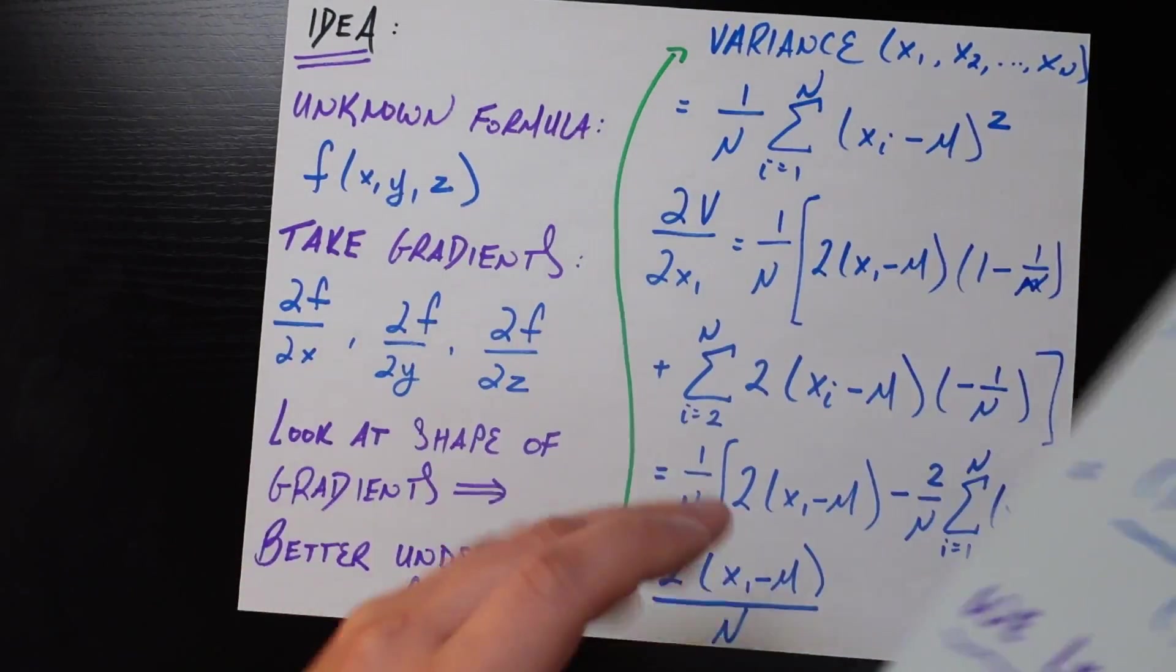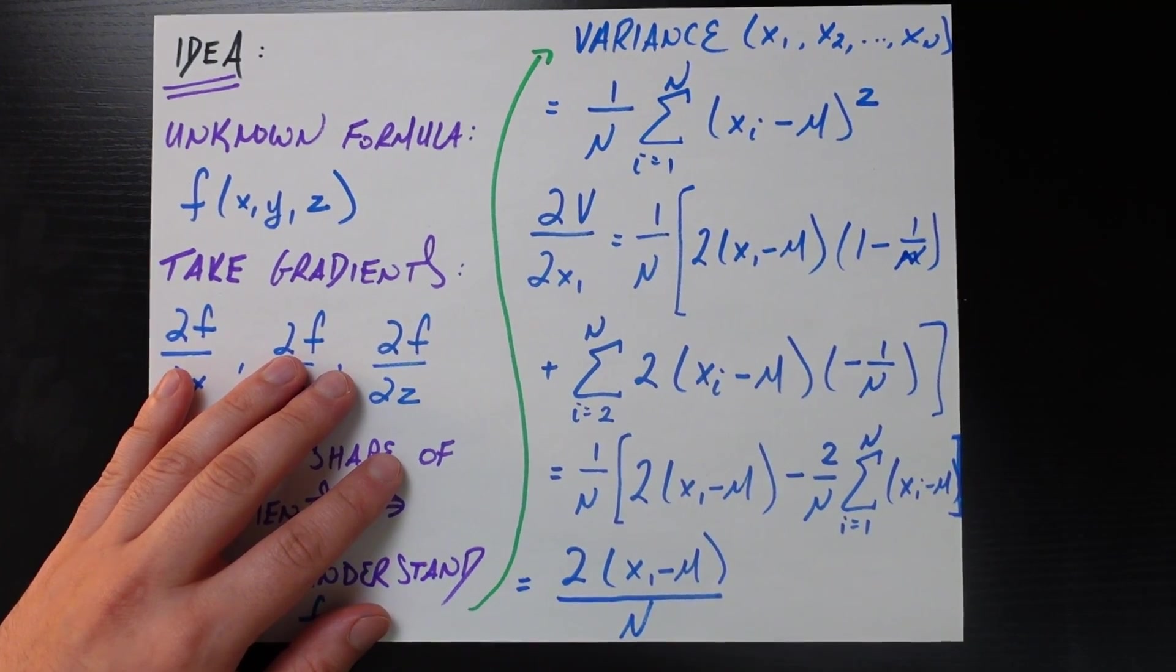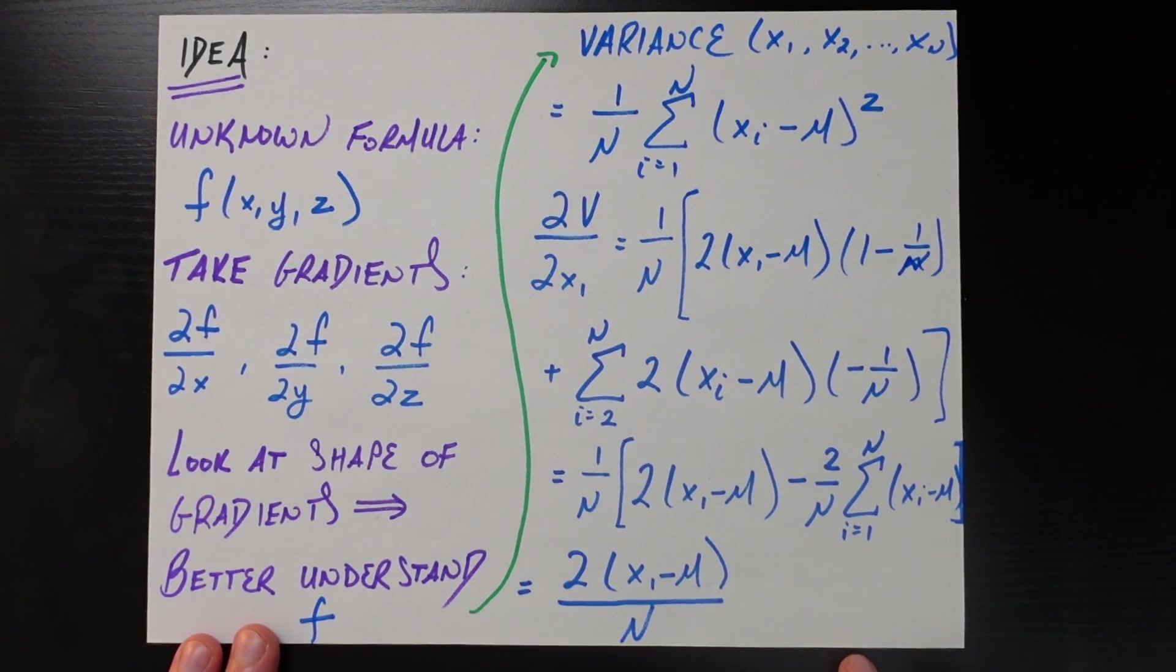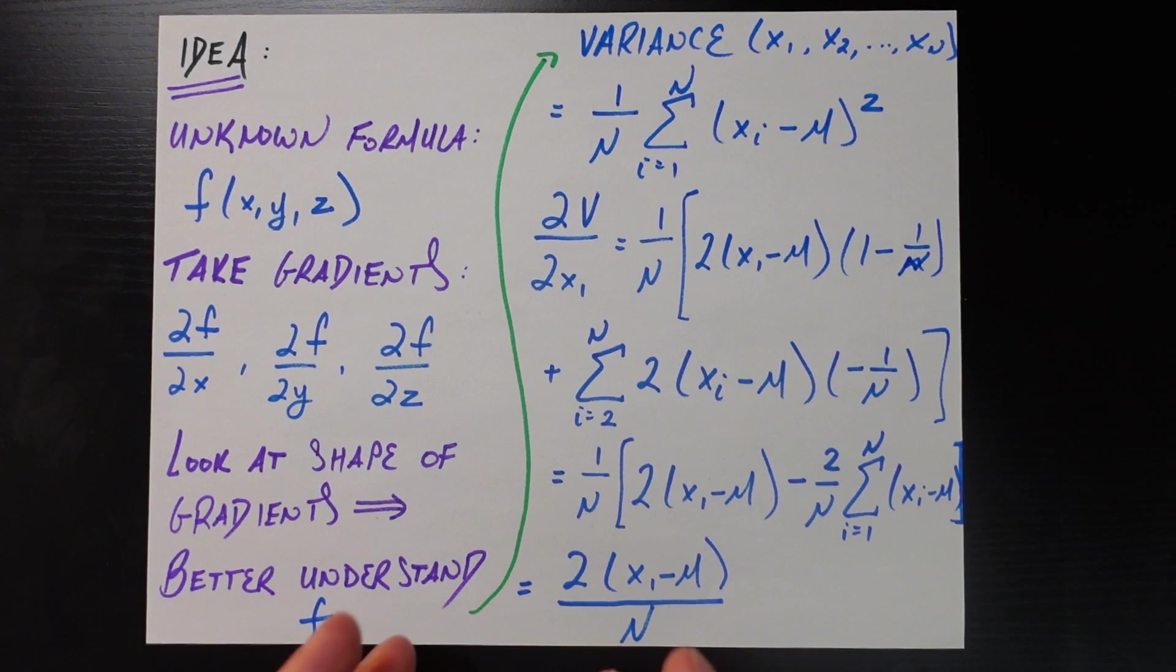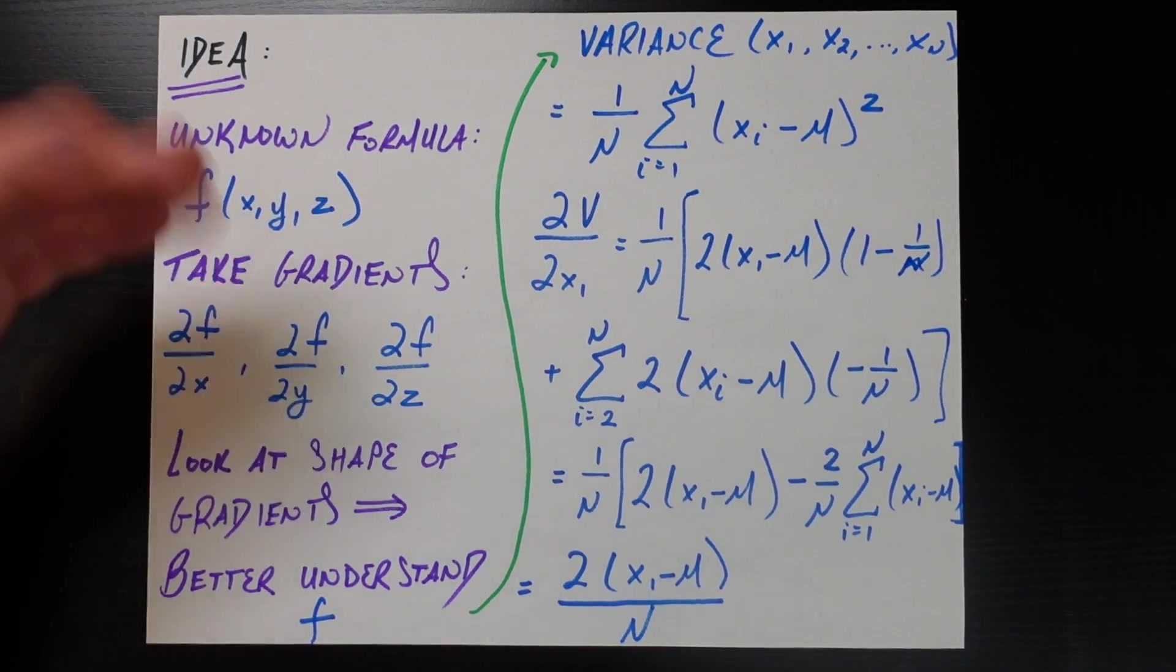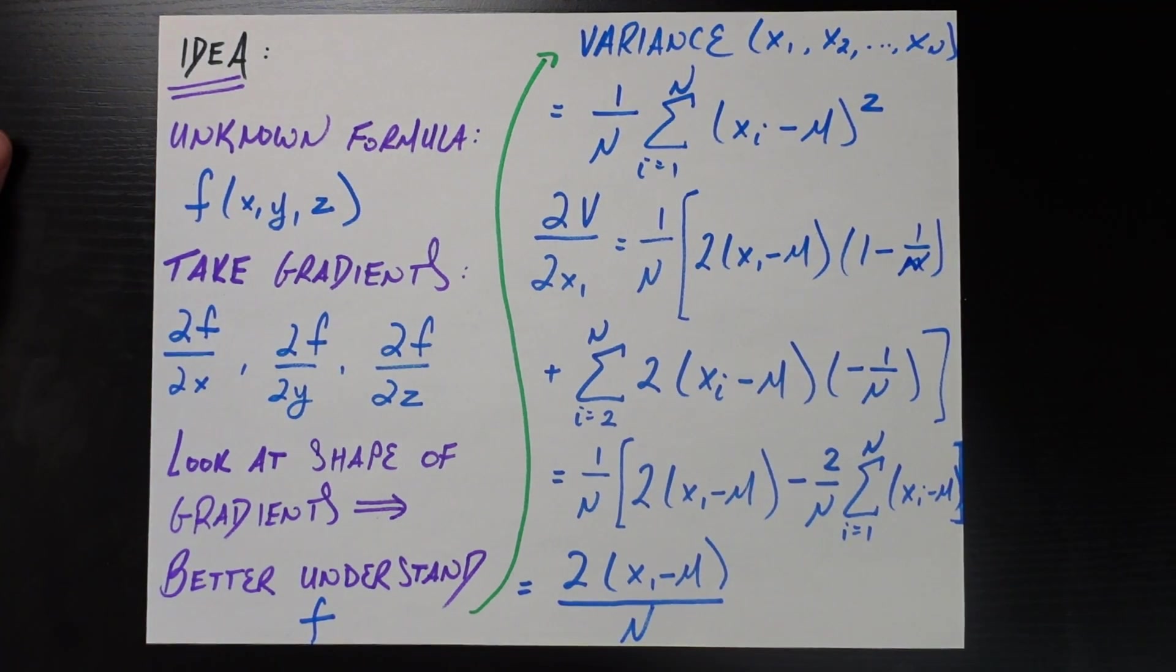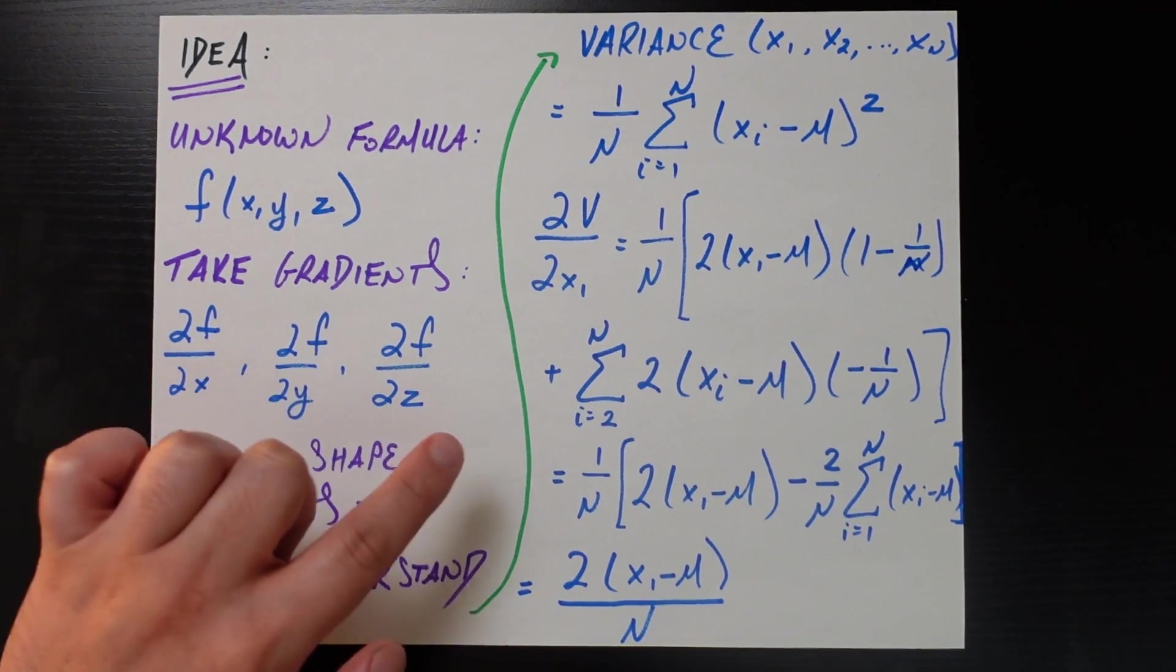So that gets us into the overall idea for today. And the idea is that anytime you have a mystery function, some kind of unknown function that is really stumping you, going through the following steps, in my experience, can be super helpful for you to gain a very important fundamental understanding of data science. So you have your unknown formula, it's some function of some arguments, x, y, and z. In the previous case, it was the F1 score and it was a function of precision and recall, but really this can work for any function of any number of arguments.